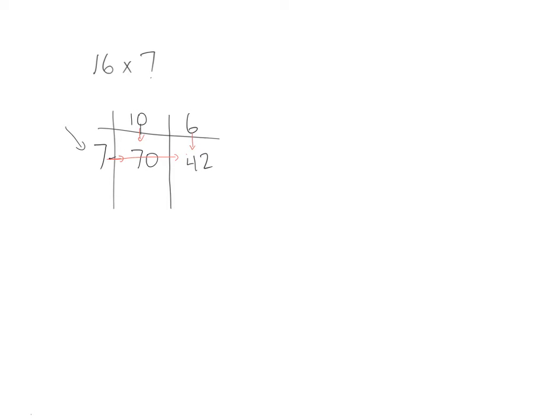Now those two numbers that we just multiplied and made, the last thing we do is we add them up. So 70 plus 42. 0 plus 2 is 2. 7 plus 4 is 11. So the answer is 112.